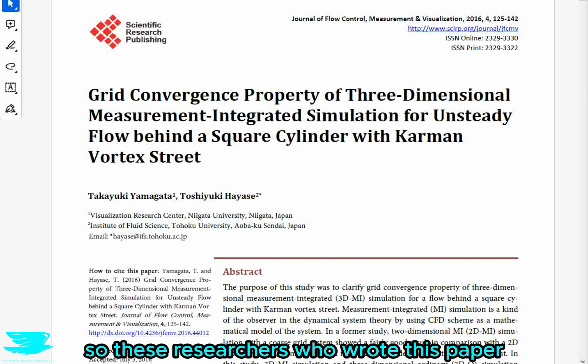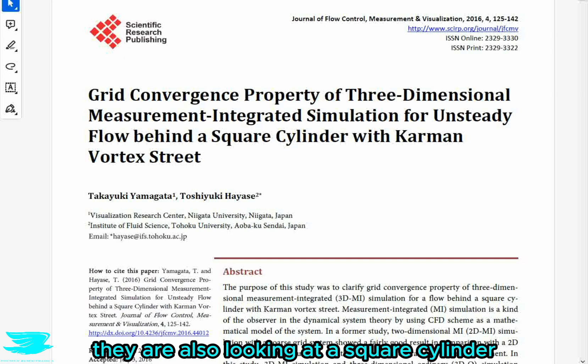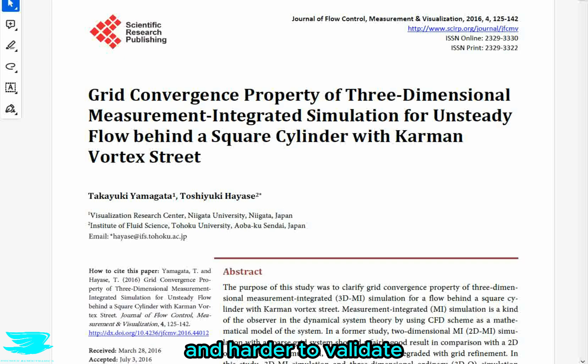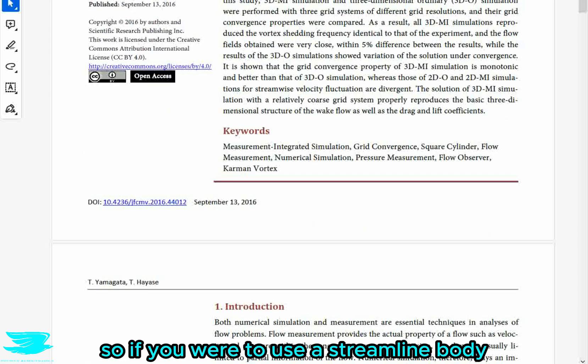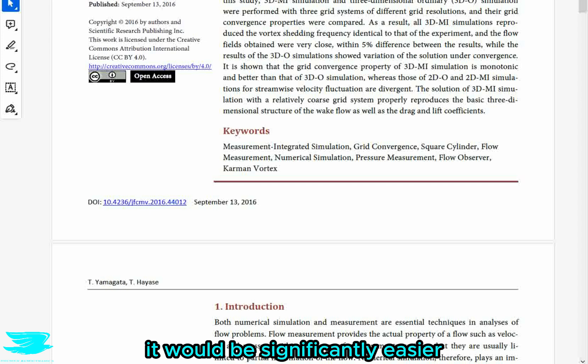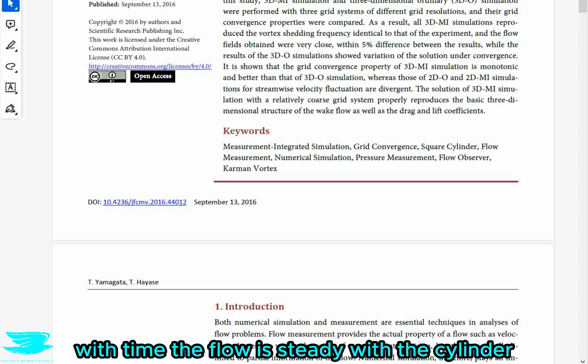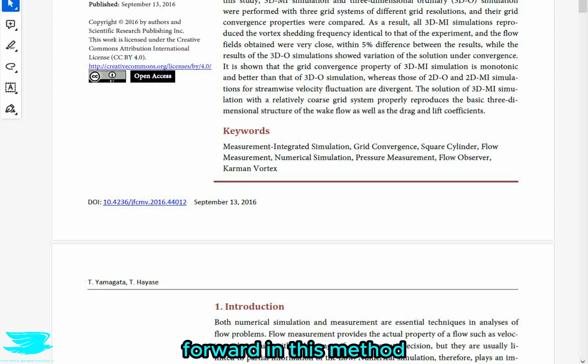So these researchers who wrote this paper seem to be part of a research group that has been looking into this method for a while, and from what I can tell, they are really pushing this field. They are also looking at a square cylinder, which I think is significantly more interesting and harder to validate with this method. This is because the square cylinder is bluff. So if you were to use a streamlined body like an airfoil, it would be significantly easier because you don't have the fluctuating component with time. With the cylinder, you now have to factor in the fluctuations, which make things much more difficult.